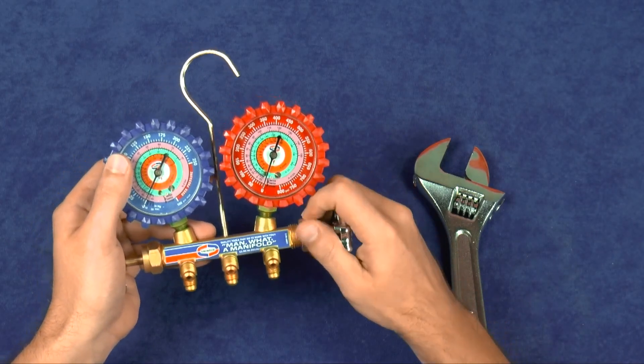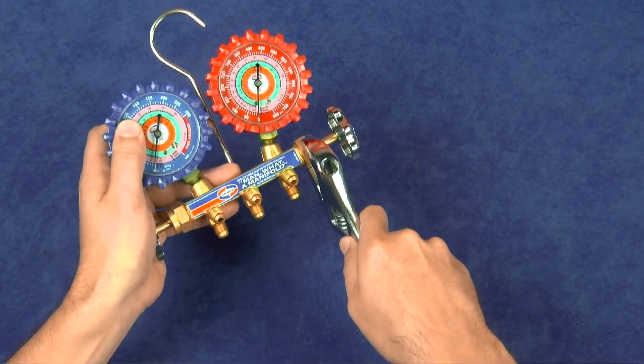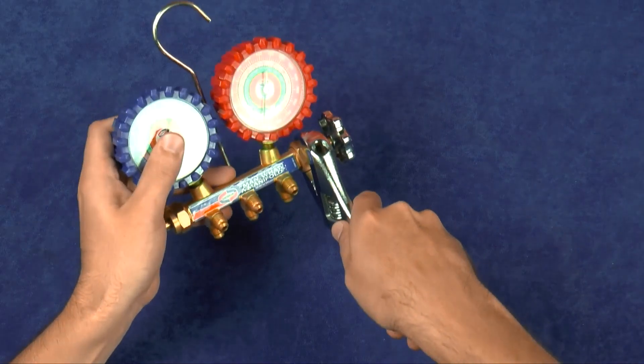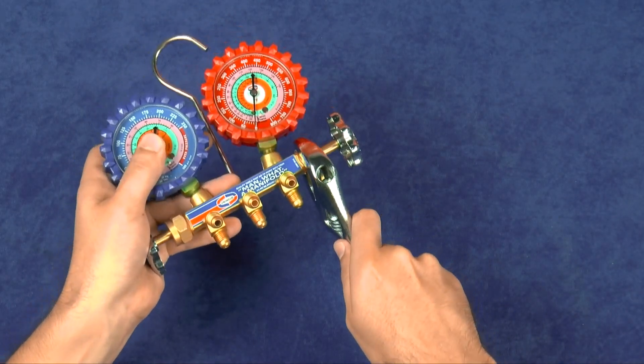The tightening of the packing nut is done by feel. The nut should be wrench tight and the hand wheel should turn to open and close the valve with some resistance.